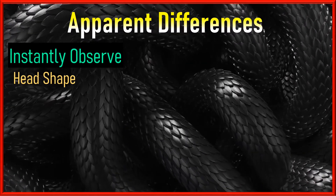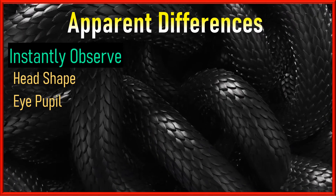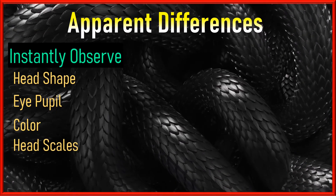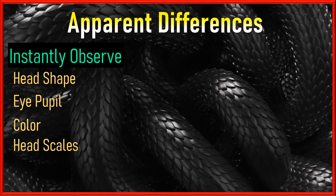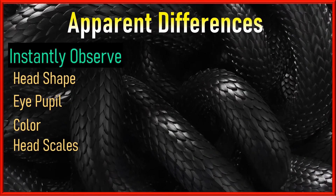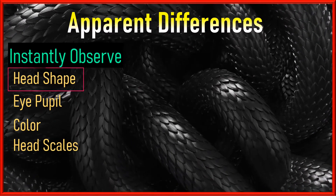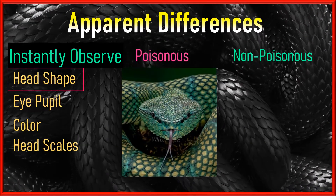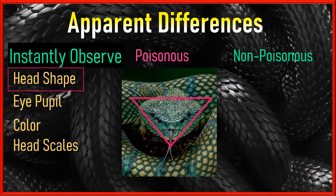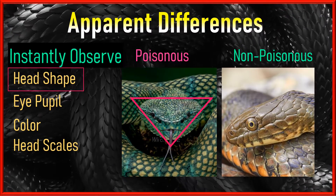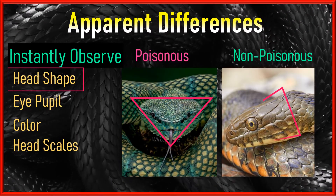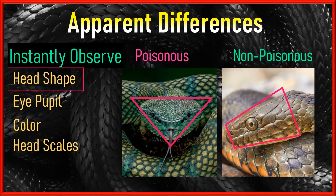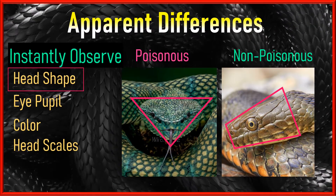First, what is the shape of the head? If the head looks triangular from the top or front view, that snake is venomous. If the head is elongated and narrow, then it is a non-venomous snake. It is advised to keep a safe distance for observation.